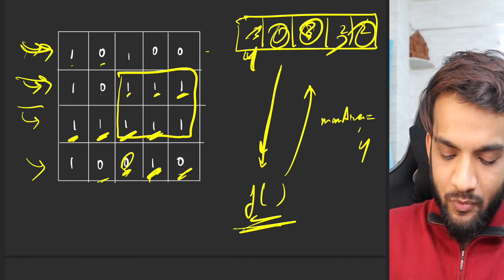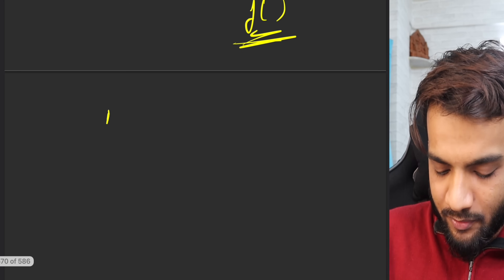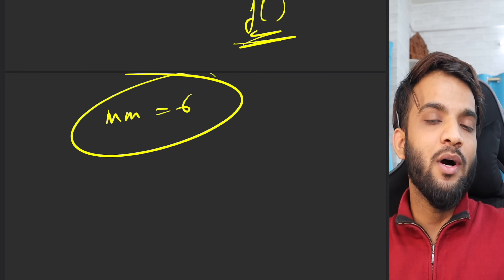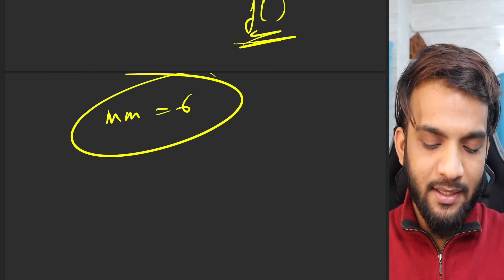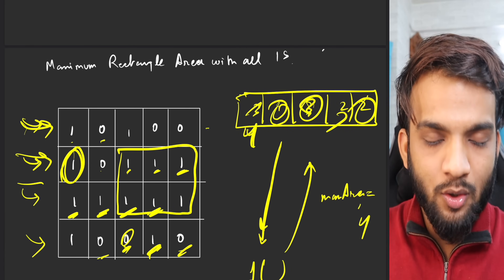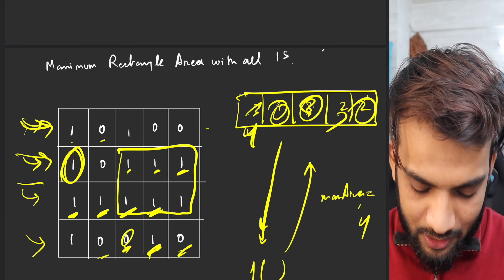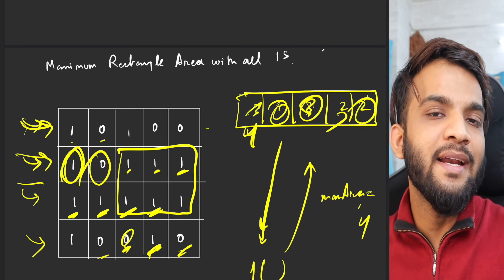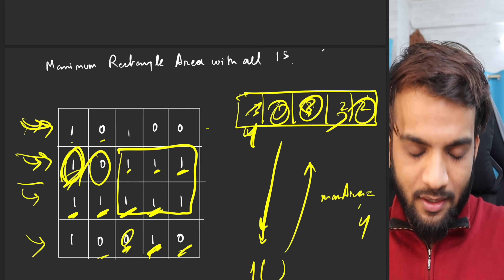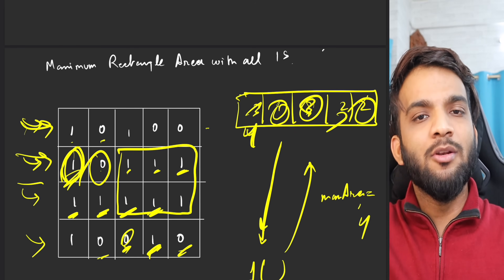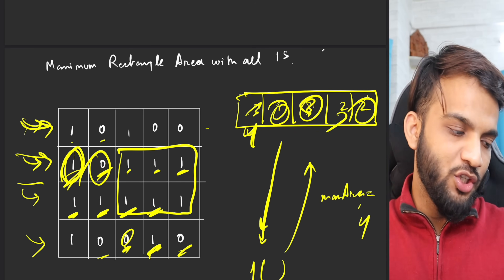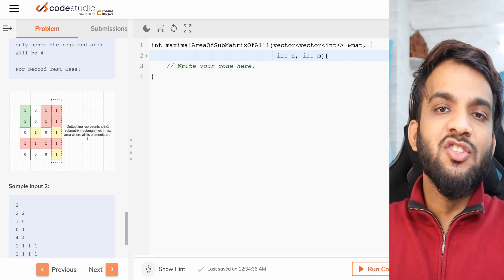Among all the function calls across every row, the maximum we got was six — that's our answer. The rule is simple: if it's a one, increase the height; if it's a zero, reset the height to zero. Let's code this up.